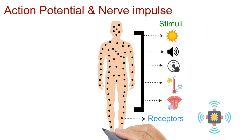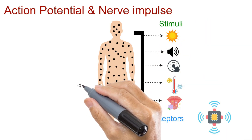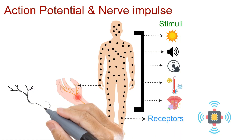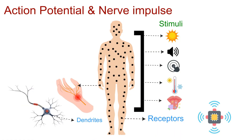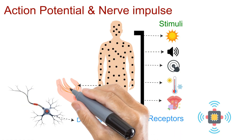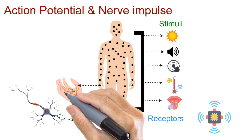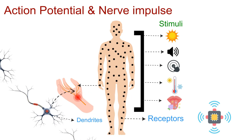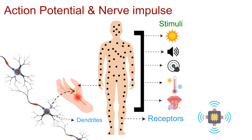Your receptors can sense these stimuli because they contain nerve endings, which are actually the dendrites of sensory neurons. These nerve endings receive the stimuli at the receptor site. The sensory neurons are then connected to each other, forming cable-like structures called nerves.